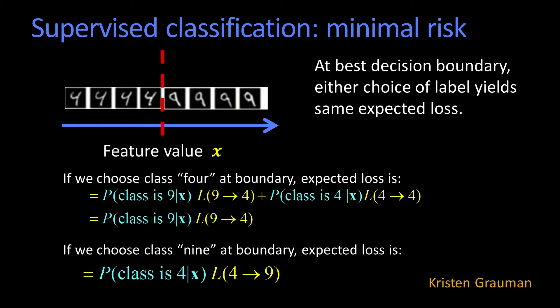Now, remember we said before, at the best decision boundary, either labeling a four or labeling a nine, the cost, the expected cost would be the same.